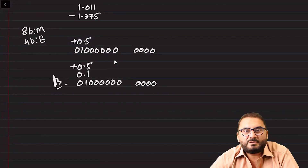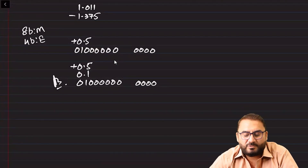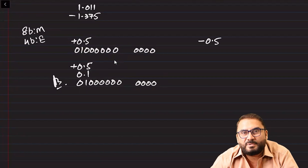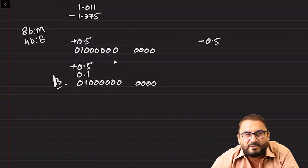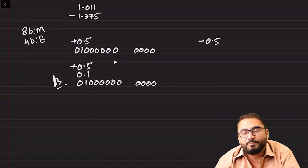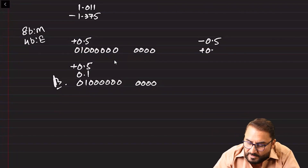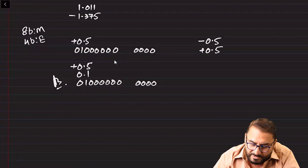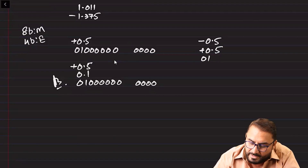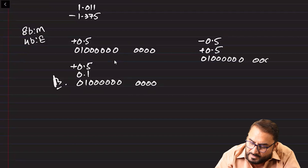So 0.5 positive converts cleanly with no normalization issue. But for minus 0.5, we first solve positive 0.5, which gives mantissa 0 1 0 0 0 0 0 0 and exponent 0 0 0 0. Now to make it negative, since it's already normalized — first two bits are different — we keep the exponent the same, keep from the right to the first one, and toggle the rest.